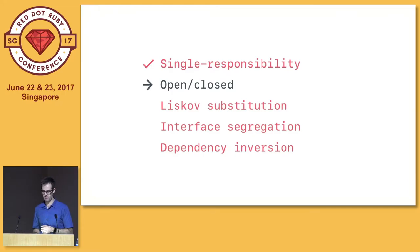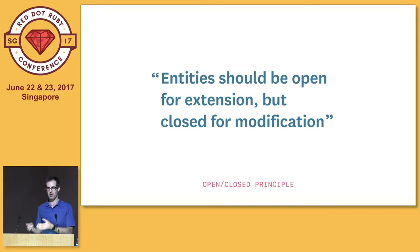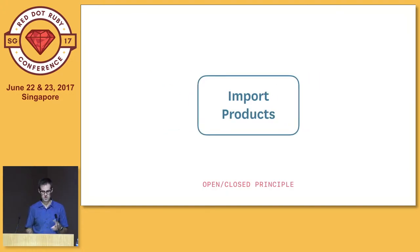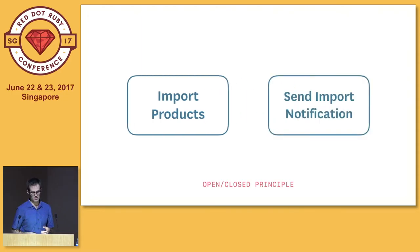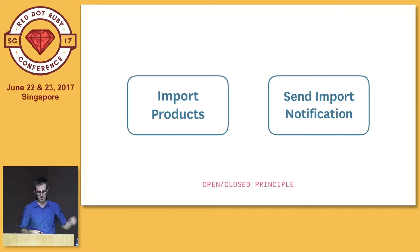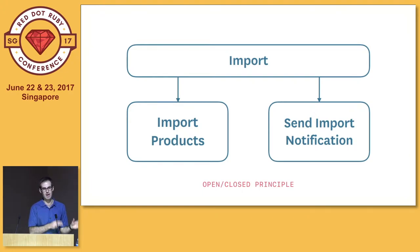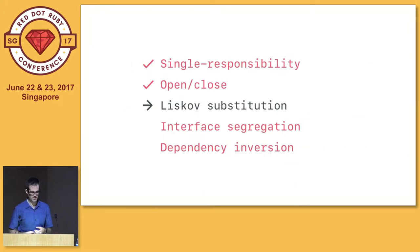The open-closed principle says that entities should be open for extension but closed for modification. When introducing new behavior, rather than modifying old objects, we should create new objects that work with the ones we already have. This plays nicely with our single-purpose functions. Say we wanted to send an email notification at the end of our import — we can extend behavior by writing a new send import notification object and wrapping them both in a higher-level coordinating object. The more of our code we leave untouched, the more confident we can be that our system will continue to run bug-free even as we introduce new changes.